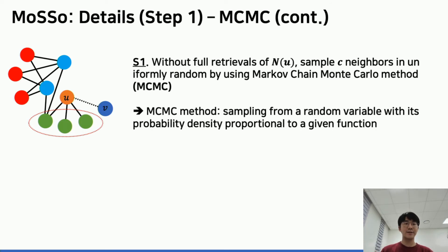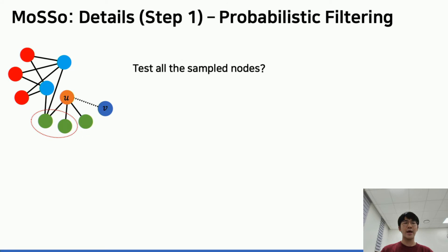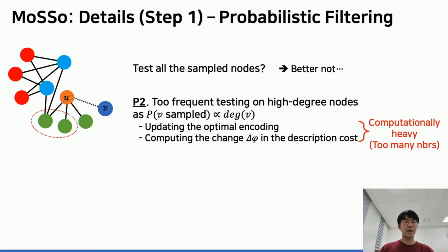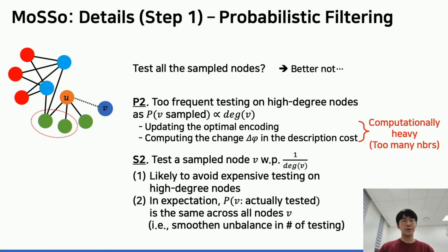Now we have seed testing nodes, and do we test all the sampled nodes? No, we better not. If we do so, testing will concentrate on high-degree nodes because the probability that a node is sampled is proportional to its degree. However, testing on a high-degree node and computing the change in description cost are computationally too heavy. Our approach is to actually test the testing node with probability 1 over the degree of the node. The probability of being tested is the same across all nodes in expectation.